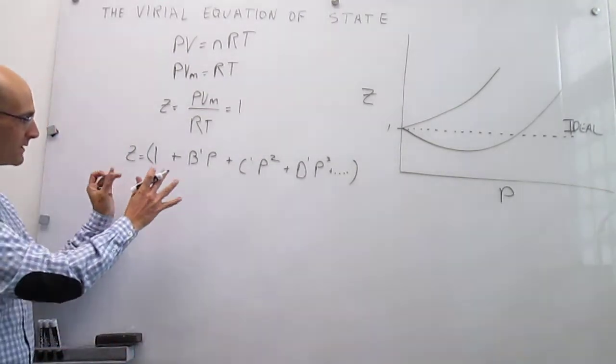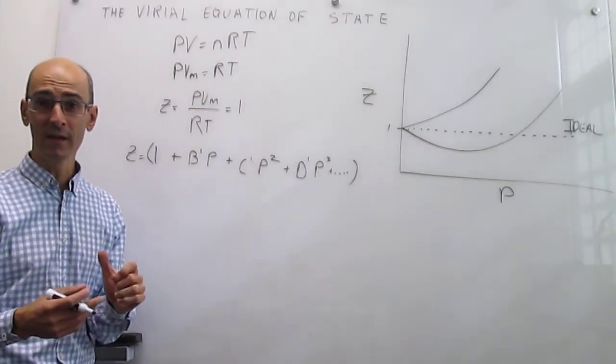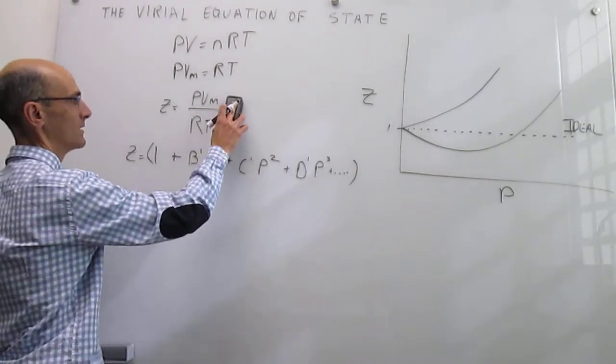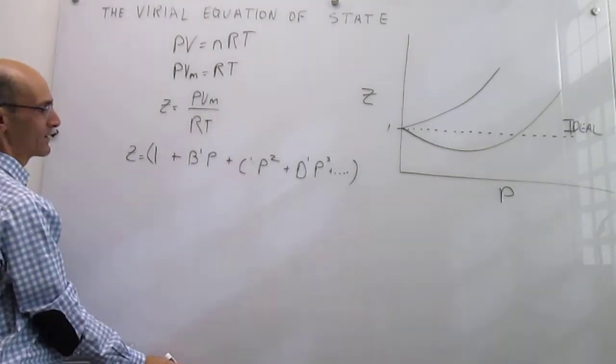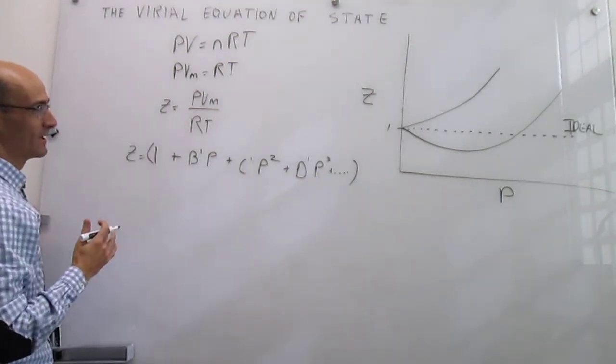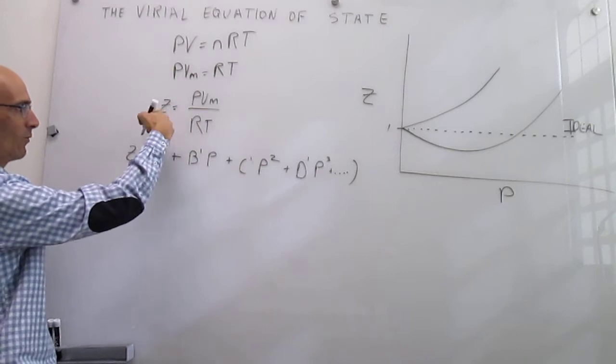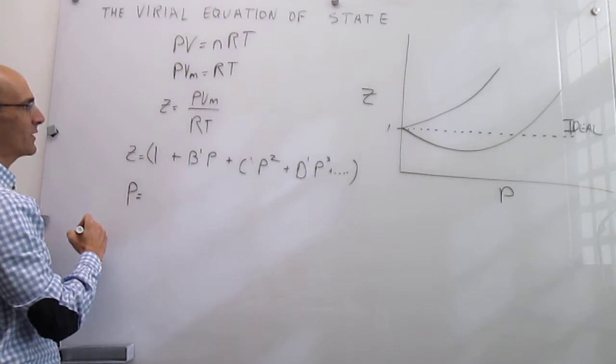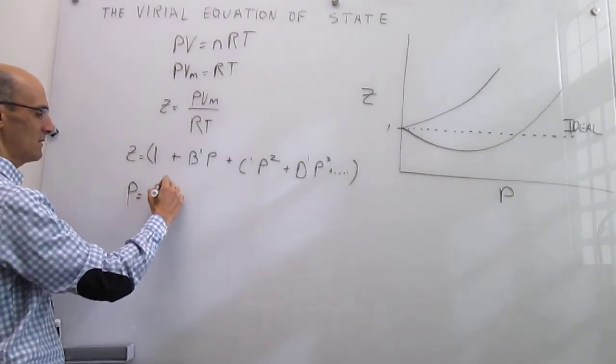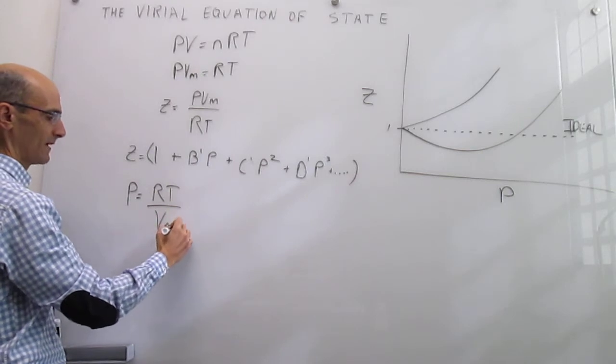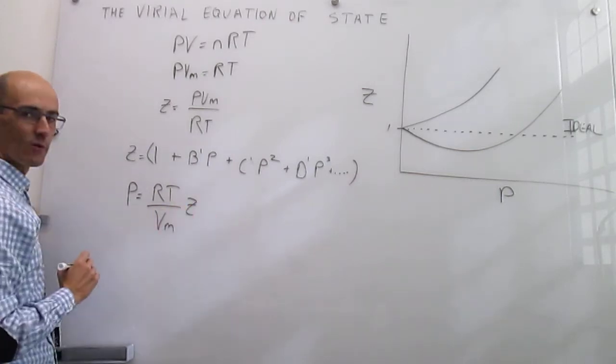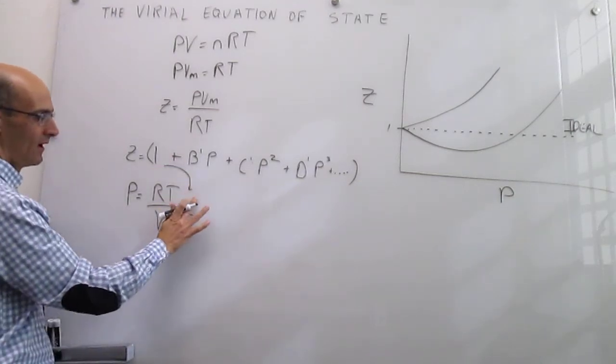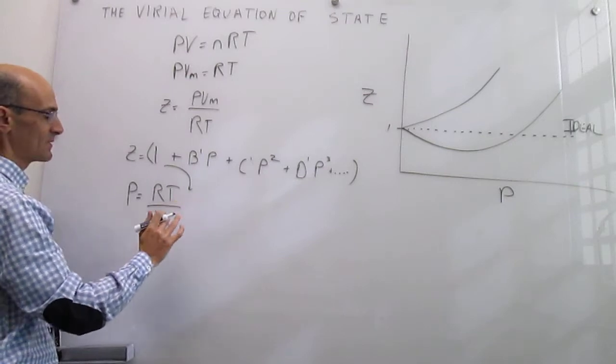So with this virial expansion, we can actually then come up with an equation of state. We can define what the compression factor is for a real case. And we can try to solve that equation for the pressure. So we solve that expression for pressure that is going to be equal to RT over the molar volume multiplied by Z, which is the compression factor, but now we can input our expression for the virial expansion of that compression factor.